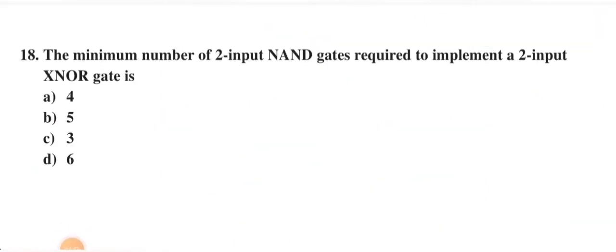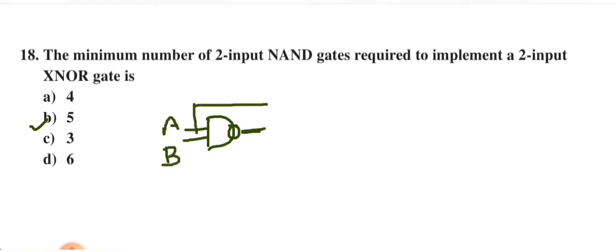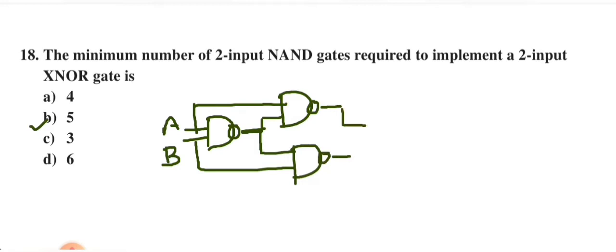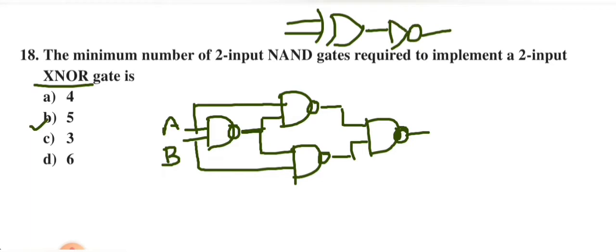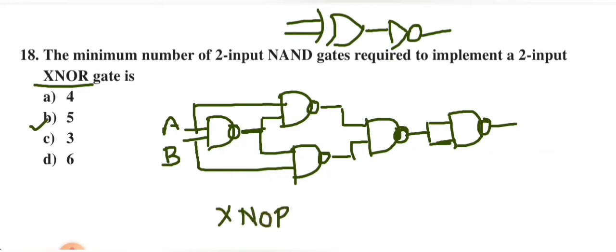Minimum number of 2-input NAND gates required to implement a 2-input XNOR gate. EXOR using NAND requires 4 NAND gates. Since XNOR is the inverted form of EXOR, one additional NAND gate is needed as a NOT gate. Total: 5 NAND gates. Option B is correct.